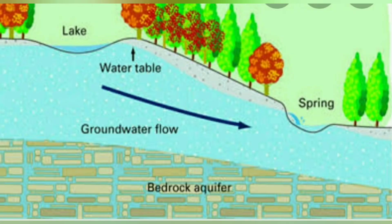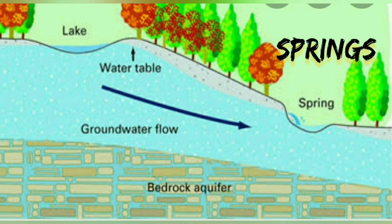Sometimes water in the ground comes out in the form of springs. When groundwater comes out directly from the ground without the use of a bore well or hand pump, that is called a spring. We will get more information about springs in the next lecture. But keep in mind: when groundwater comes out suddenly from the ground, that is nothing but a spring.